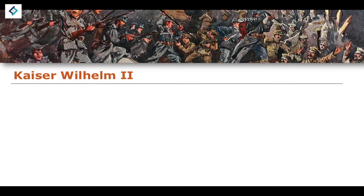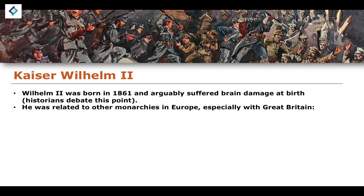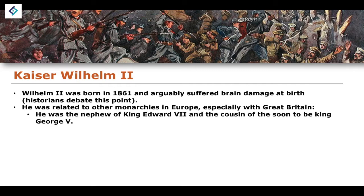Given that we're talking about an Anglo-German rivalry, we have to introduce the study of Kaiser Wilhelm II. Kaiser Wilhelm II was born in 1861 and arguably suffered brain damage at birth — though historians debate whether there is substantive evidence for this. He was related to a number of monarchies around Europe: he was the nephew of King Edward VII and the cousin of the soon-to-be King George V. The descendants of many monarchs of the great empires during the First World War were actually descendants of Queen Victoria, which is also why Kaiser Wilhelm II was related to Tsar Nicholas II of Russia.